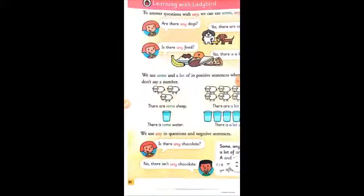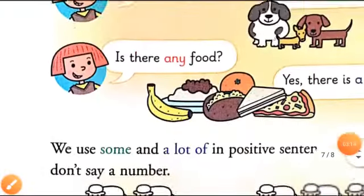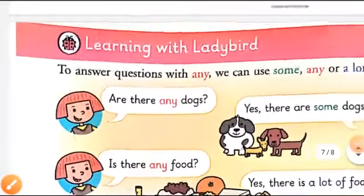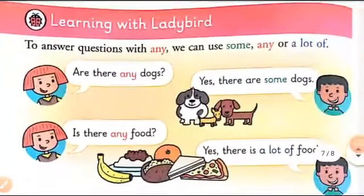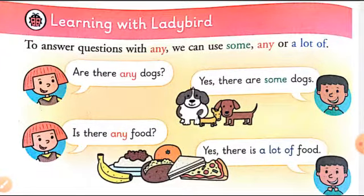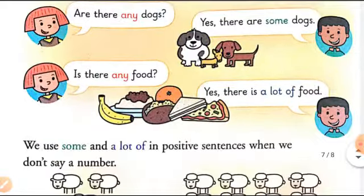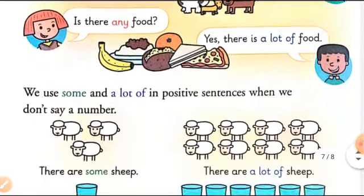Now, learning with the ladybird. To answer questions with 'any' we can use 'some', 'any', or 'a lot'. For example: Are there any dogs? Yes, there are some dogs. Is there any food? Yes, there is a lot of food. We use 'some' and 'a lot' in a positive sense when we don't say a specific number.